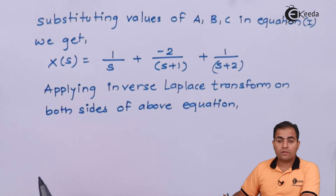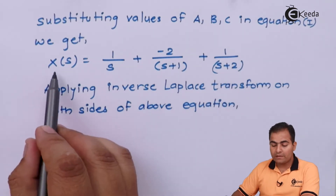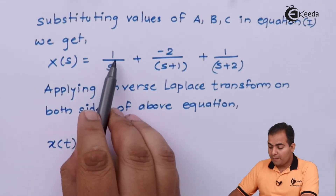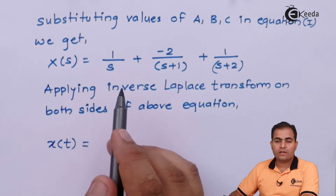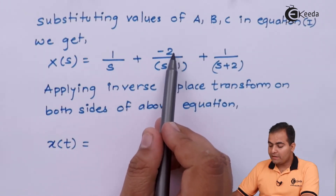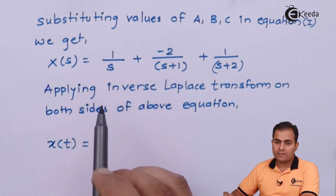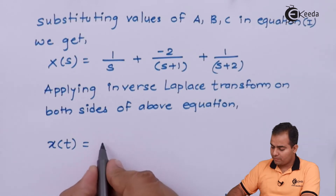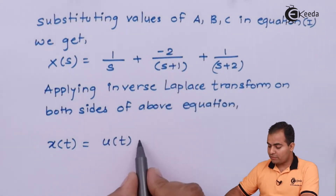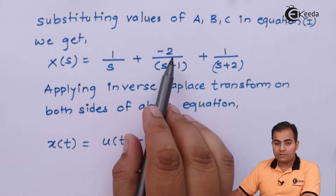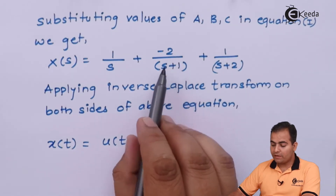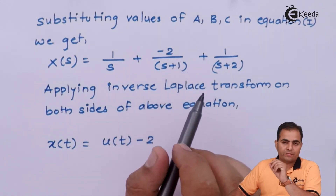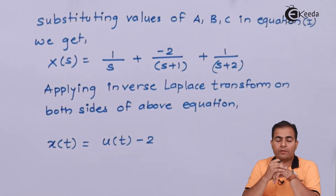Applying inverse Laplace transform on both sides: inverse Laplace of X of S is X of T. We know inverse Laplace of 1/S is unit step. For the term minus 2/(S+1), here S is replaced by S plus 1, which means there is a frequency shifting property. Whenever any input signal is multiplied by an exponential signal, the input signal will be frequency shifted by the given value.